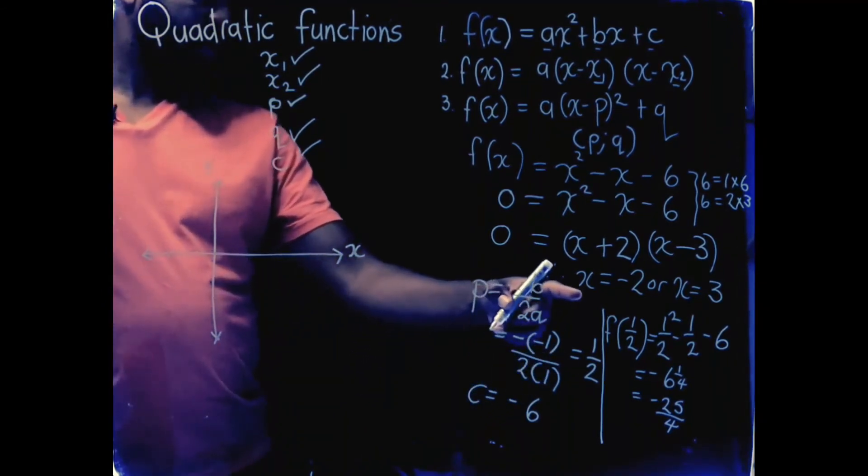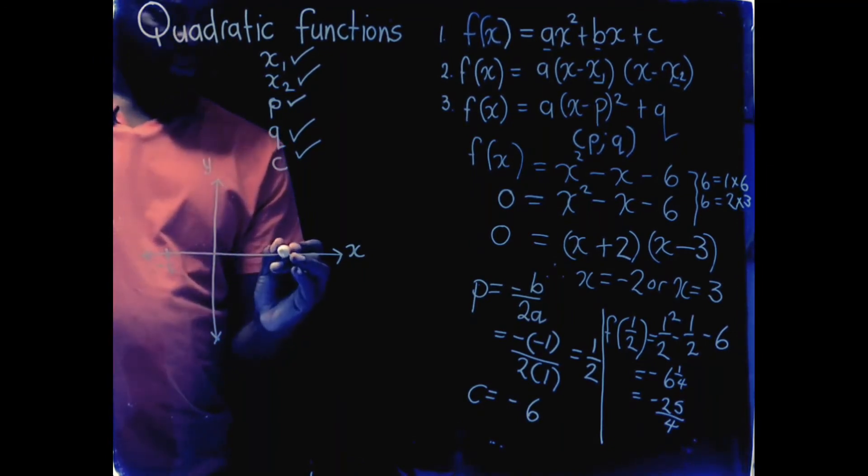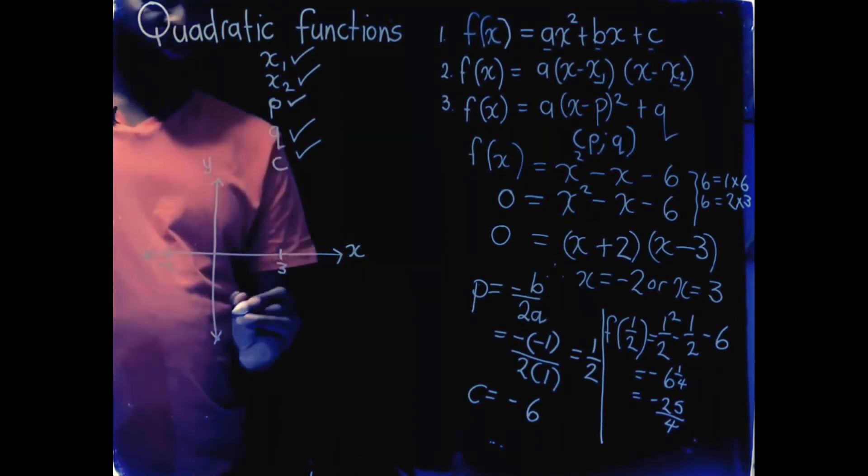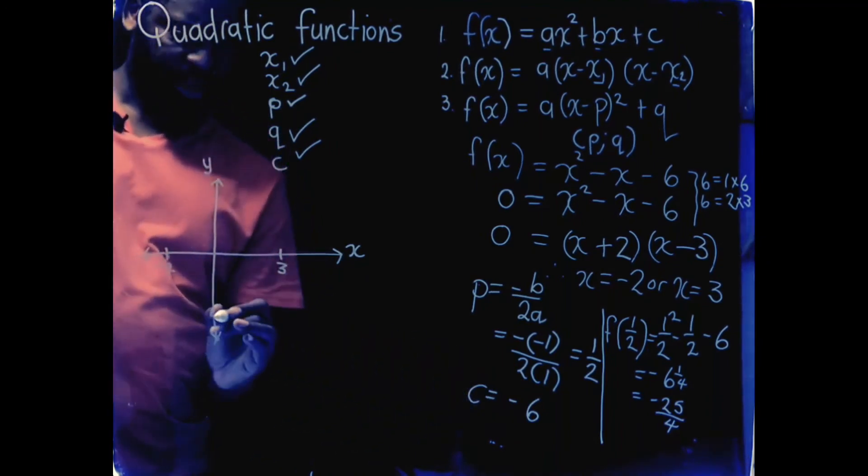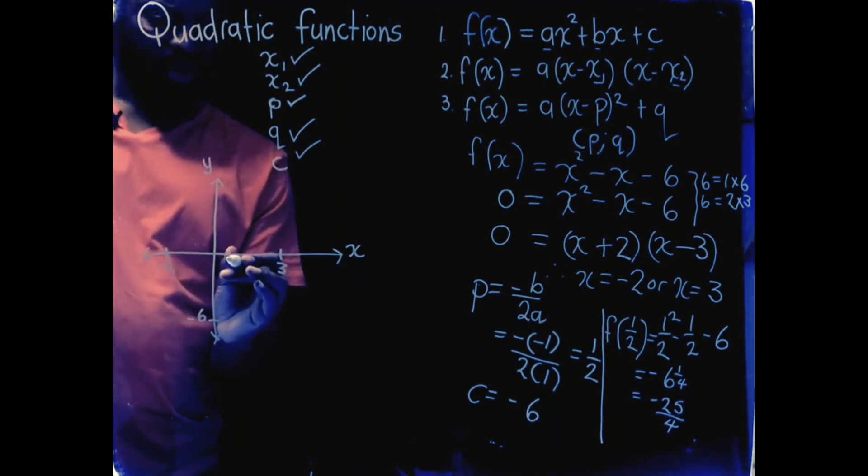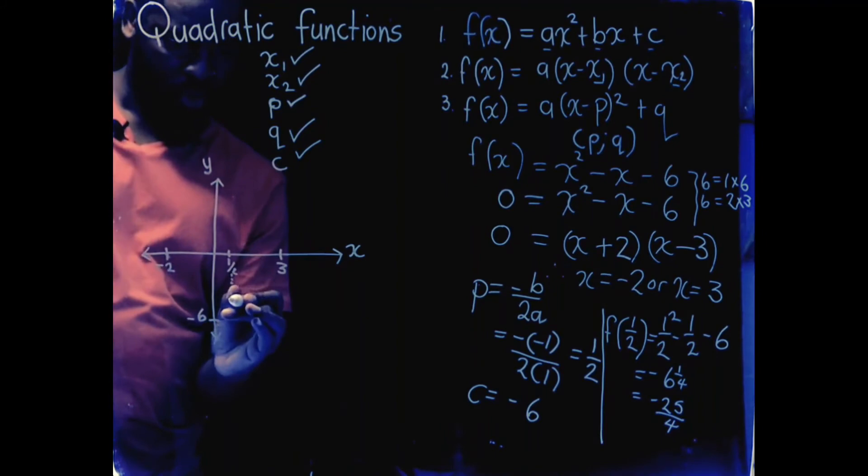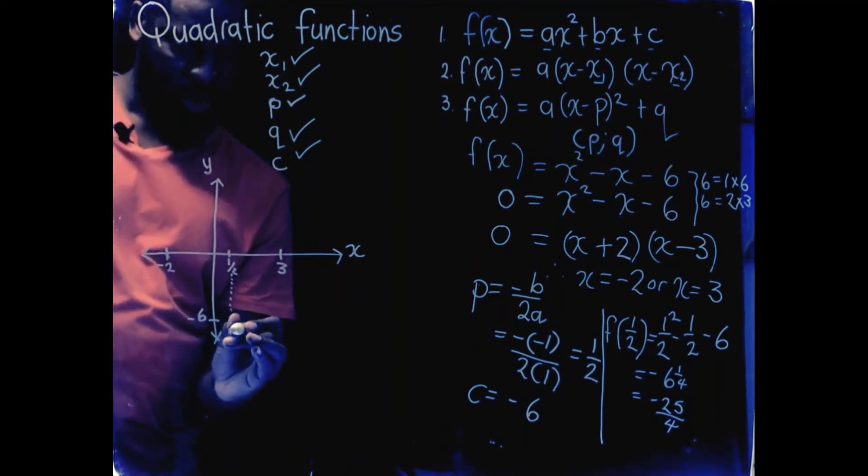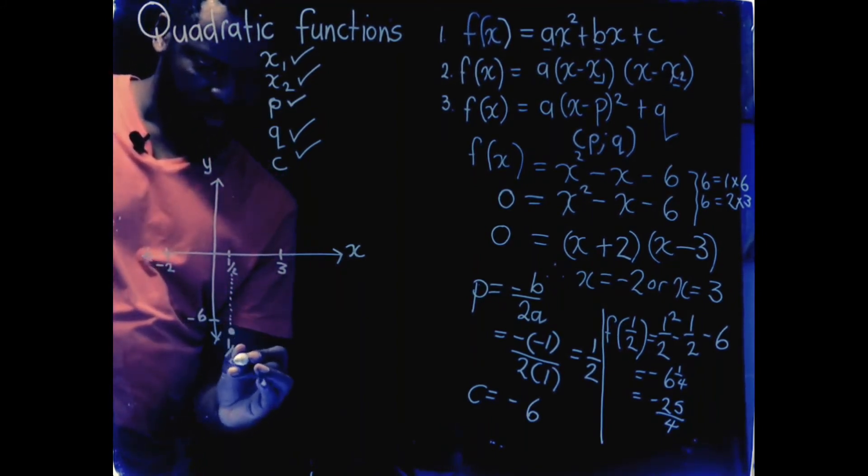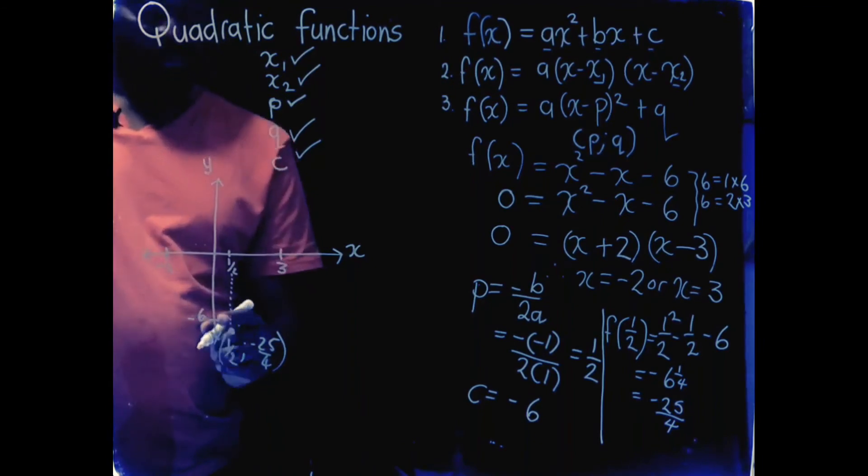So, I'm looking for minus 2. Let's assume that minus 2 is there and let's say 3 is around about there. Minus 6. If I make minus 6 there, then a half should be somewhere there. That's where the half is. And then negative 6 and a quarter or 25 over 4. There it is. So, I've got a half and negative 25 over 4.